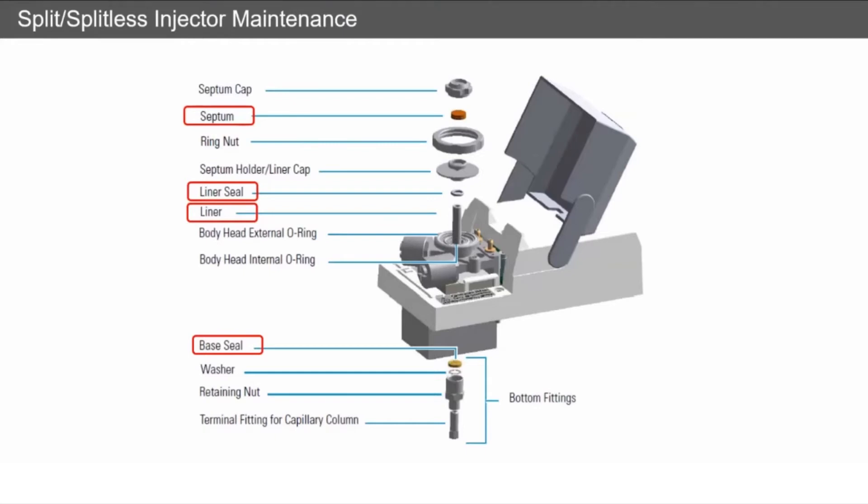The liner, this is really method dependent. If you're injecting really dirty samples, you're going to need to replace the liner on a more regular basis.